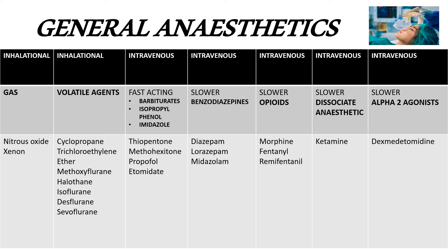To summarize the classification: inhalational agents include gases — nitrous oxide and xenon — and volatile agents — cyclopropane, trichloroethylene, ether, methoxyflurane, halothane, isoflurane, desflurane, and sevoflurane. Intravenous agents include fast-acting barbiturates (thiopentone sodium, methohexitone), isopropylphenols (propofol), imidazole compound (etomidate), benzodiazepines (diazepam, lorazepam, midazolam), opioids (morphine, fentanyl, remifentanil), dissociative anesthetic (ketamine), and alpha-2 agonist (dexmedetomidine). Happy learning, thank you.